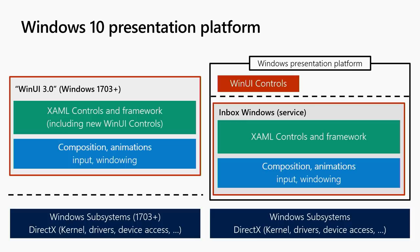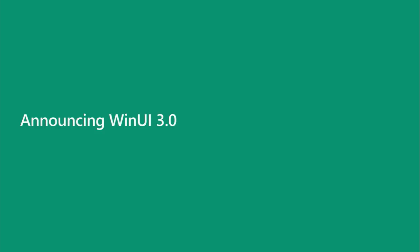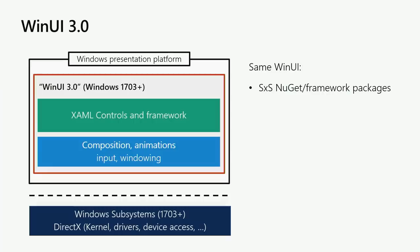We think of that whole concept of decoupling the whole presentation platform as WinUI 3.0 — it's just the next evolution of WinUI. With WinUI 3.0, what you effectively get is the future of the presentation platform: not just controls available outside of Windows, but the whole composition system, the animation system, the controls, and the framework — all available as a NuGet package that you can use side-by-side on previous versions of Windows 10, currently 1703 and above, which is RS2 and above. This works the same way as WinUI does today — NuGet package, side-by-side.